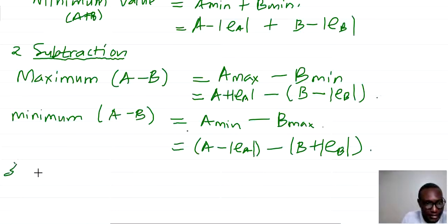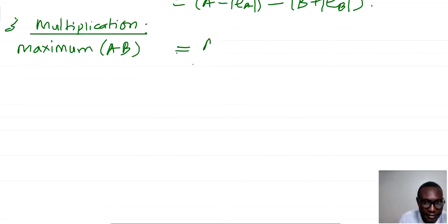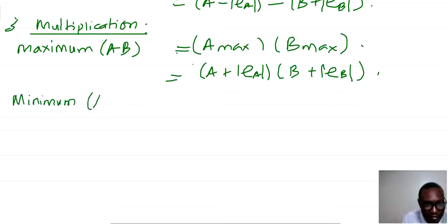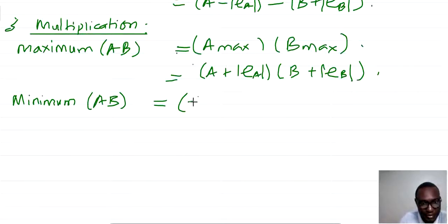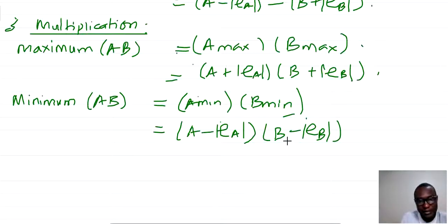Thirdly, we look at multiplication. The maximum of A times B is obtained if both A and B are maximized: (A plus EA) times (B plus EB). For the minimum value of A times B, both A and B should be minimized: (A minus EA) times (B minus EB).